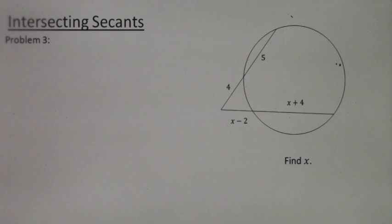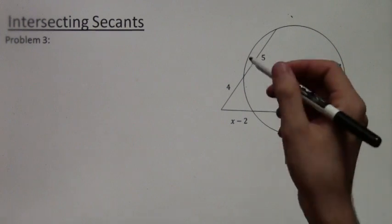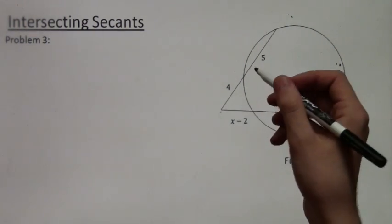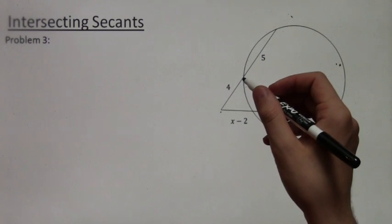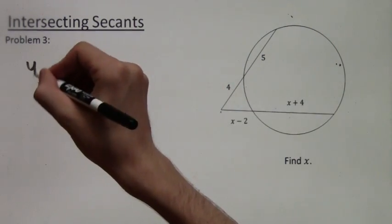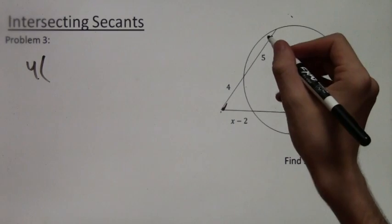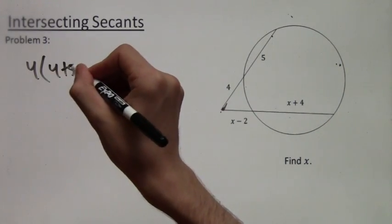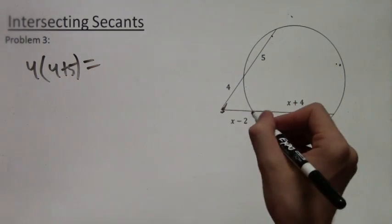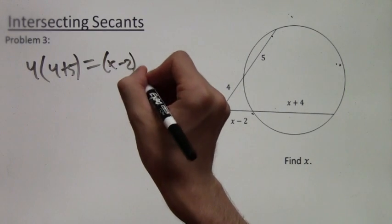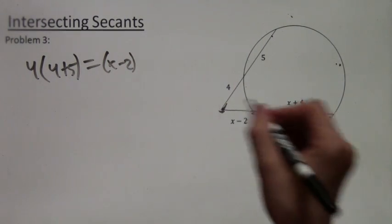Alright, now for the last example. I have 4 times 4 plus 5 is going to be 9, and then x minus 2 times x minus 2 plus x plus 4.